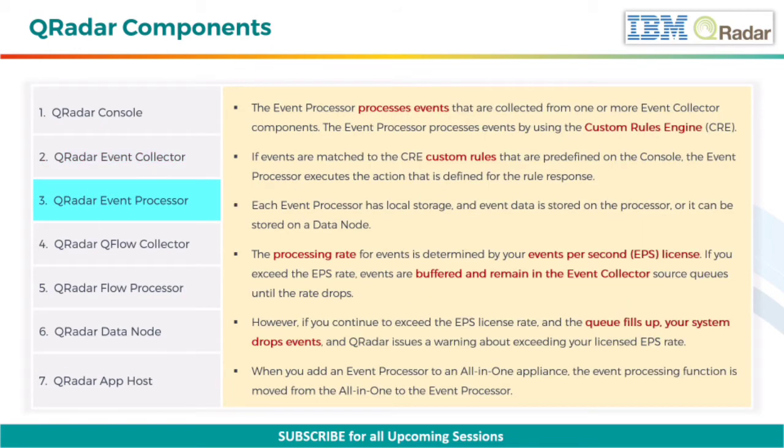Next, the Event Processor processes events that are collected from one or more Event Collector components. The Event Processor processes events by using the Custom Rules engine. If events are matched to the CRE custom rules that are predefined on the console, the Event Processor executes the action that is defined for the rule response.